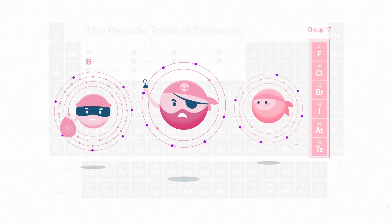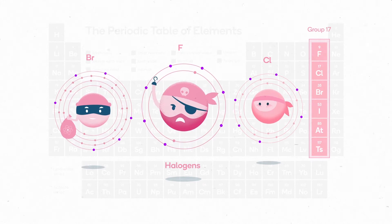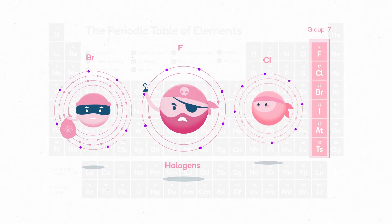Fluorine and the other elements in group 17 are called the halogens. They need to gain just one electron to fill their outer shell and this makes them very reactive.